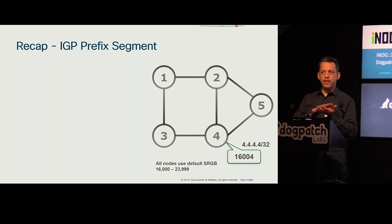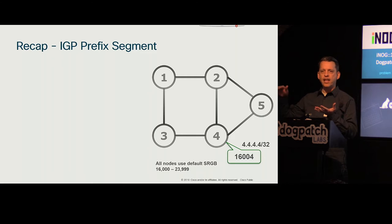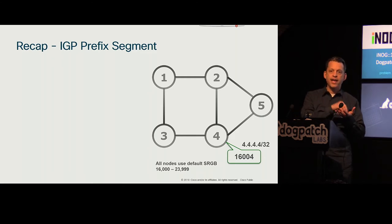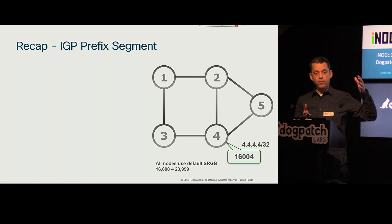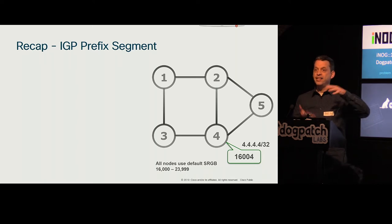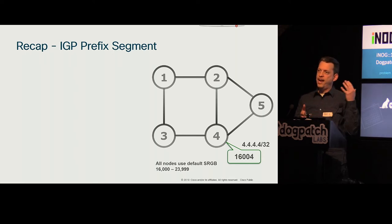We do that while we remove protocols from the network — we remove LDP or RSVP-TE for label distribution. Now if I want to forward packets through the MPLS or IPv6 network, I put all the state at the source — hence source routing — and the state is represented by MPLS labels, a stack of labels, or a number of IPv6 headers inside a routing header extension.